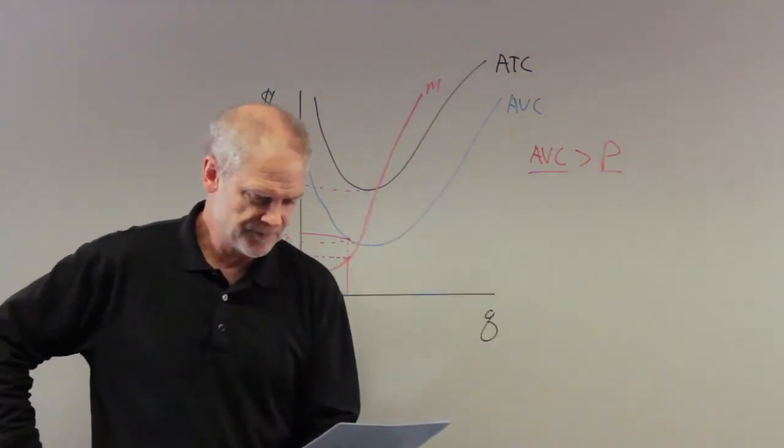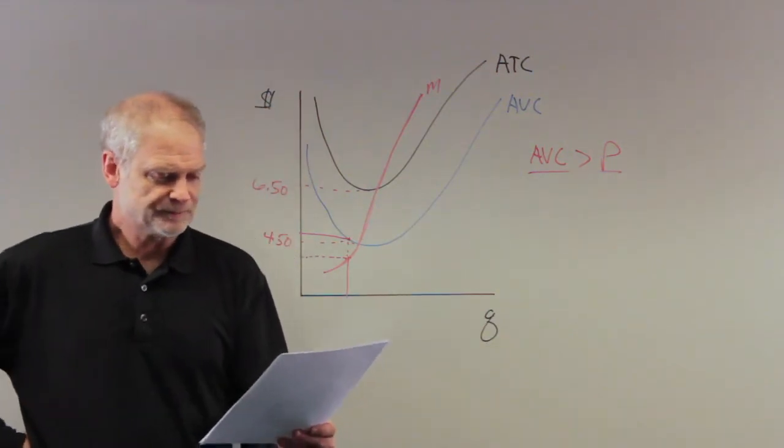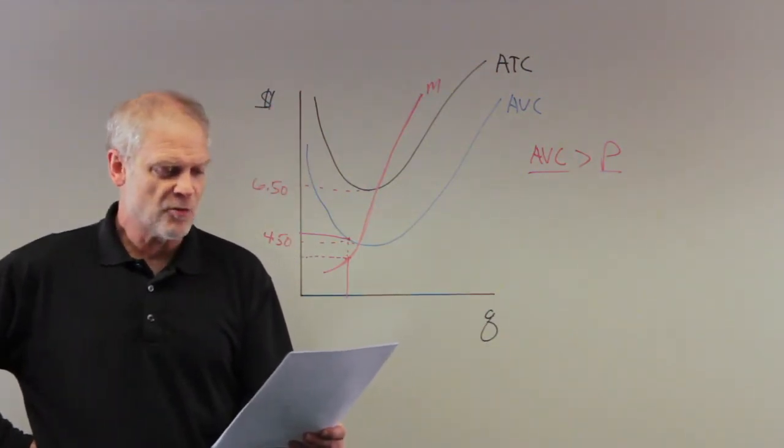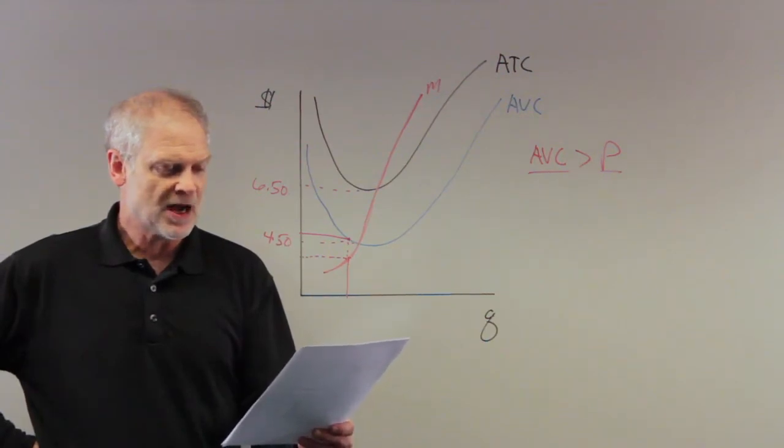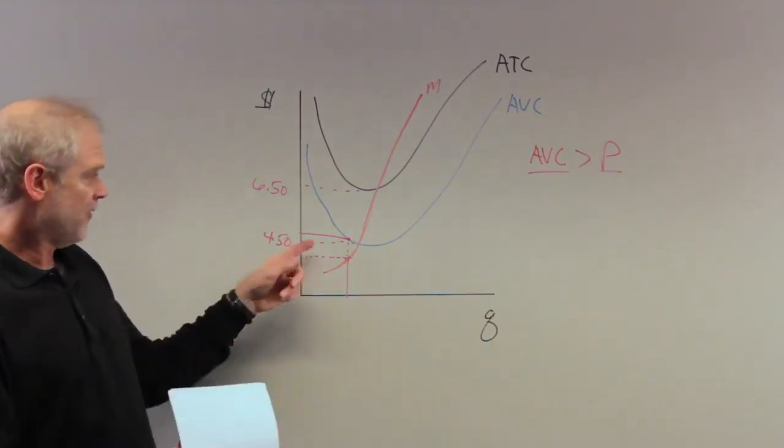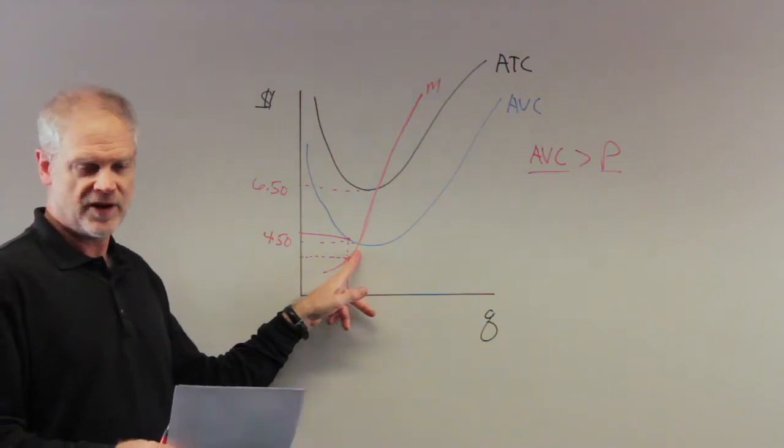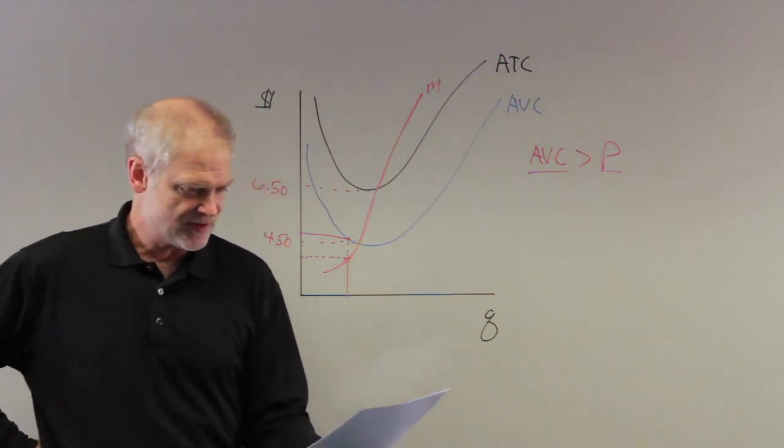What are our choices here? Above one, the firm will earn positive economic profits in the short run? At $4.50? No way. We can't even cover our variable cost. So that one's out.